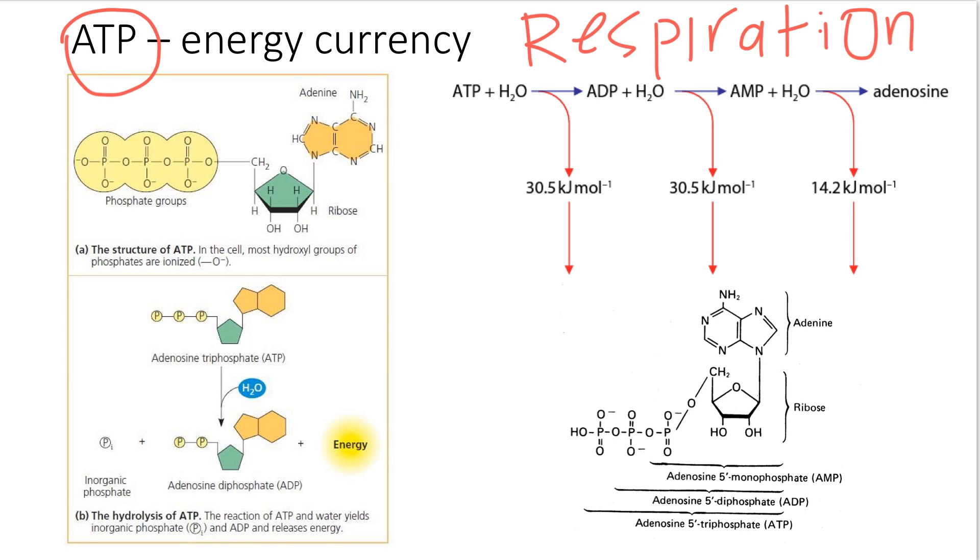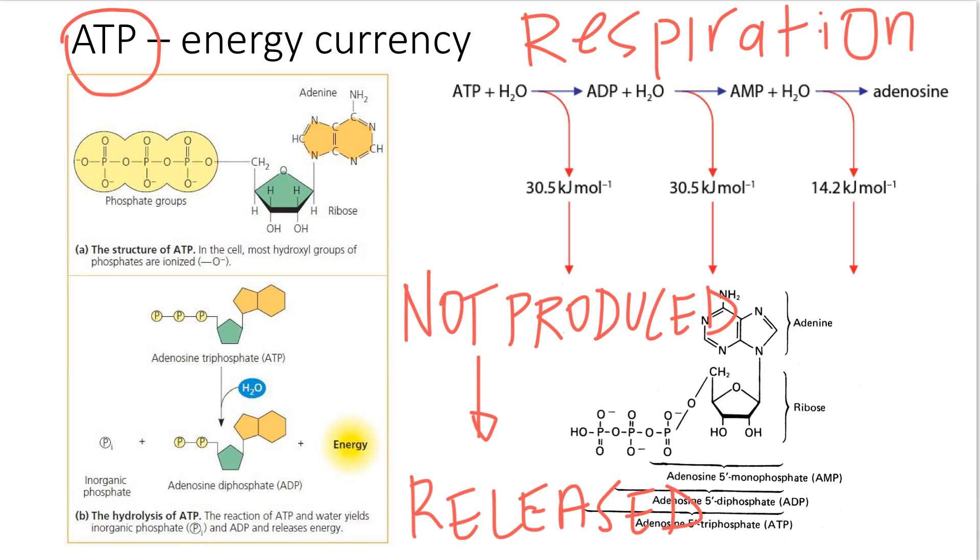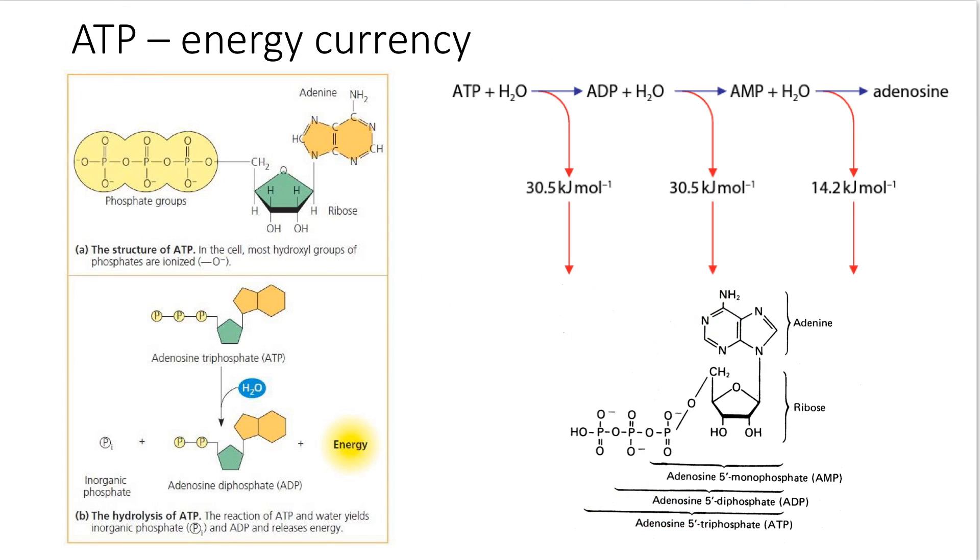Energy is not produced. This would be a wrong way of expressing it, since energy can neither be produced nor destroyed. You need to use the term released. Even though they may sound the same to you, they're technically not the same. Energy being produced is wrong, so prefer writing energy is released, otherwise your answer will be rejected.